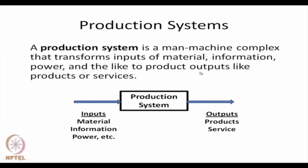Normally we use the term production system — basically it is a man-machine complex that transforms input of material, information, and power, and it produces outputs such as products or services. In a manufacturing environment or in the context of a manufacturing system, we call it a production system.